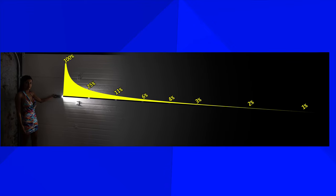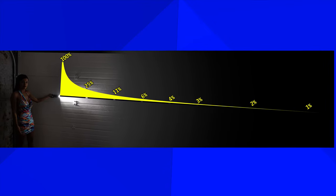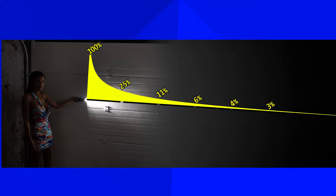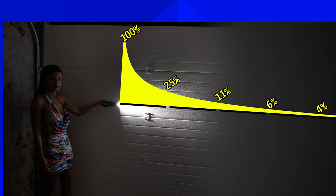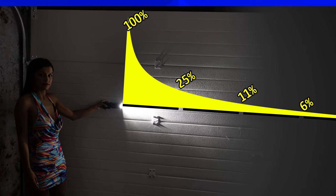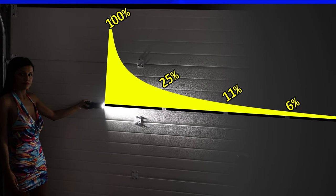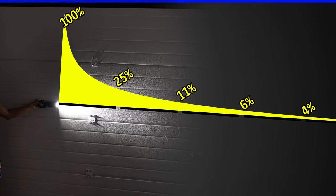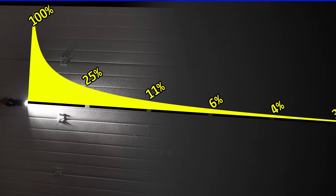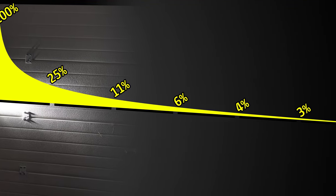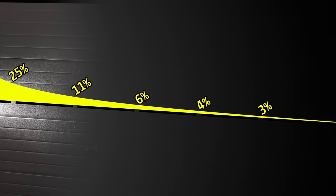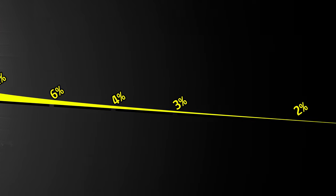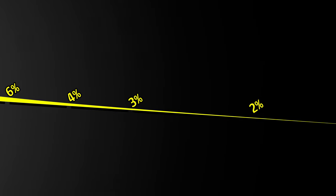To explain better, here is a simple graph — no need to know it by heart, you just need to be aware of it and how the light works. As you can see, the light fades very quickly in the beginning, and at the end it loses intensity or luminosity very slowly.